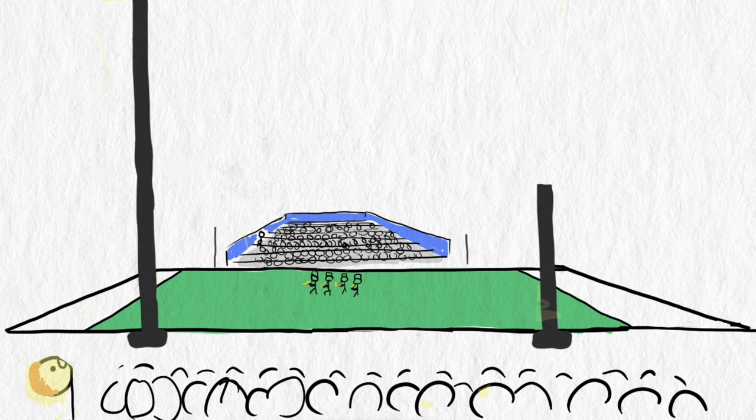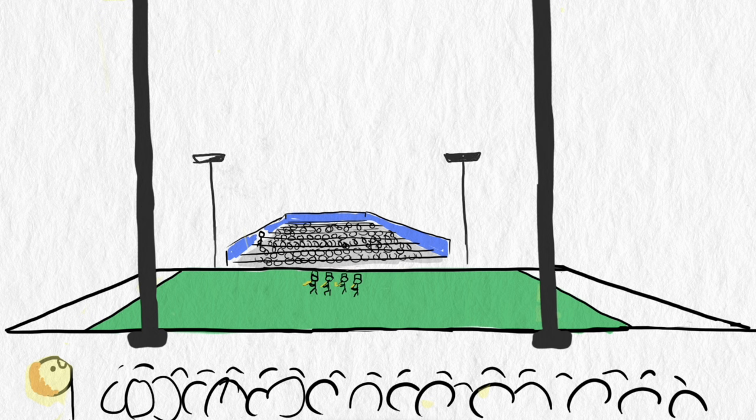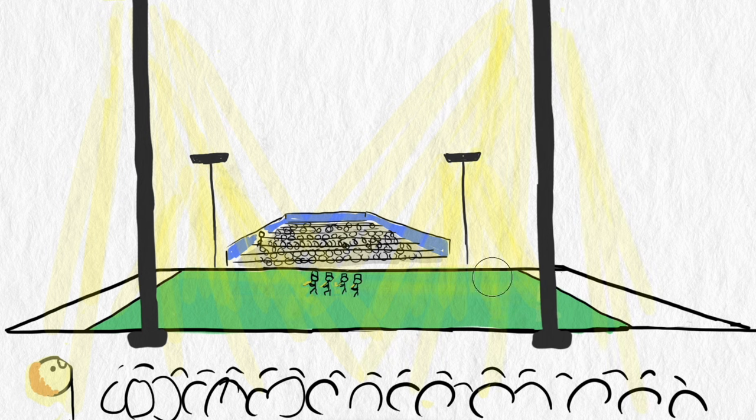Another strategy is to raise the lights. Raising the lights helps to even out the intensities. It moves the light farther away from everyone, so the change in distance from the fans to the coaches to the players is not so dramatic.